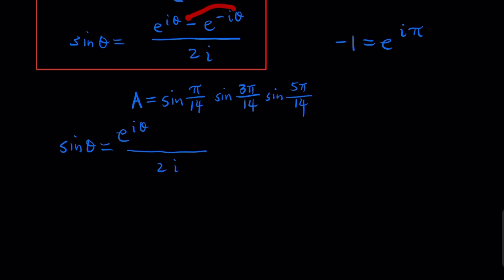So if we do that, we can rewrite this part as e^(i(π-θ)). So we're going to plug in the formula here for this expression. So I'm going to rewrite A = sine π/14, sine 3π/14, sine 5π/14. This is going to be (e^(iπ/14) + e^(i13π/14))/(2i).